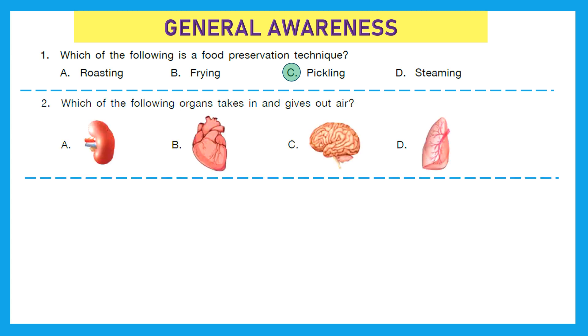Question 2: Which of the following organs takes in and gives out air? Is it kidney, heart, brain or lungs? The right answer is option D, lungs.